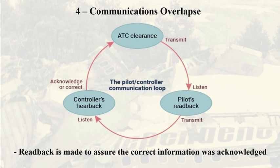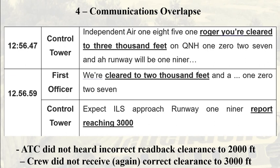Also of importance to explain this particular communication issue is the definition of read-back. In aviation, it's a standard procedure to perform a read-back of the message received, so the receiver of the message can confirm they obtained the correct information from the transmitting station. Referring to the communication mentioned earlier: the controller issued a descent clearance to 3,000 feet and briefly paused. During this pause, Flight 1851's first officer began a read-back of what they incorrectly understood as a clearance to 2,000 feet, while the controller continued to transmit his message, stating again a clearance to 3,000 feet. Crucially, these two simultaneous transmissions overlapped each other, meaning ATC did not hear the first officer's read-back of an incorrect clearance to 2,000 feet, and the jet's crew did not receive ATC's correct descent clearance to 3,000 feet.